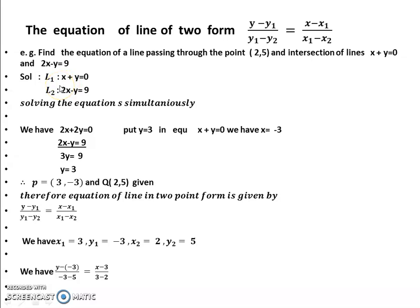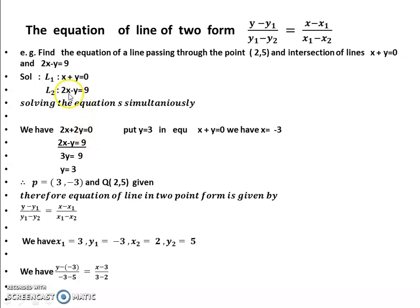Let L1 be x plus y equals 0 and L2 be 2x minus y equals 9. We solve these equations simultaneously. Adding the two equations, y terms cancel, giving 3x equals 9, so x equals 3. Substituting back, we get y equals minus 3. The intersecting point P is (3, minus 3).